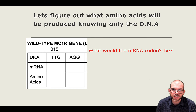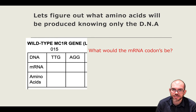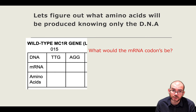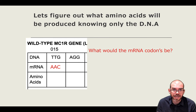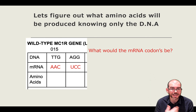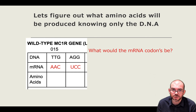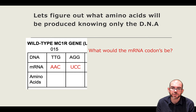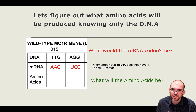So let's figure out these two DNA codons: TTG and AGG — what amino acid sequence would be made? First, we need to figure out what the mRNA codons will be by following our normal base pairing rules: A goes to T, C goes to G. Do that for both. A reminder that RNA does not have thymine — instead it has uracil. So my mRNA complement for AGG is going to be UCC.